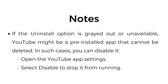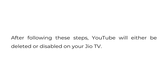If the uninstall option is grayed out or unavailable, YouTube might be a pre-installed app that cannot be deleted. In such cases, you can disable it. Open the YouTube app settings and select disable to stop it from running. After following these steps, YouTube will either be deleted or disabled on your GeoTV.